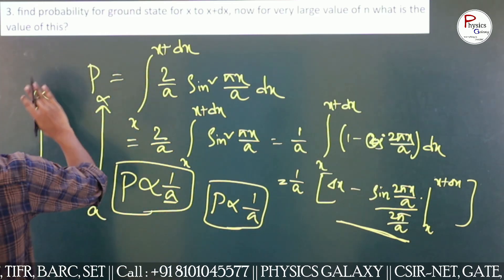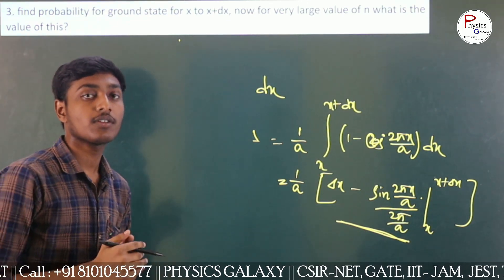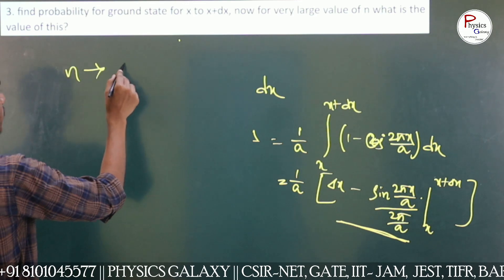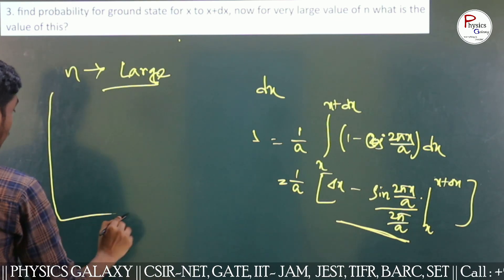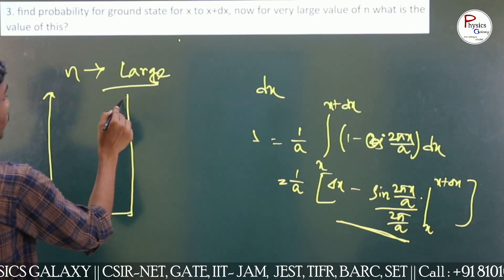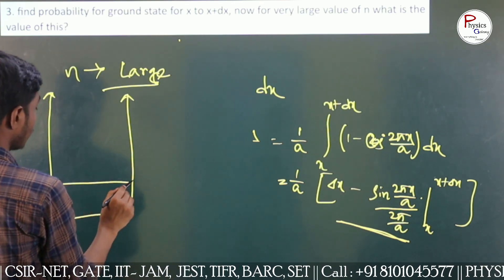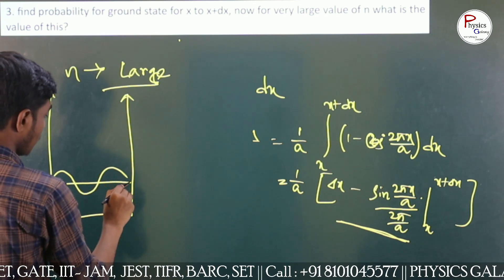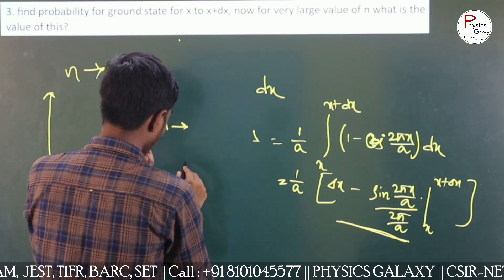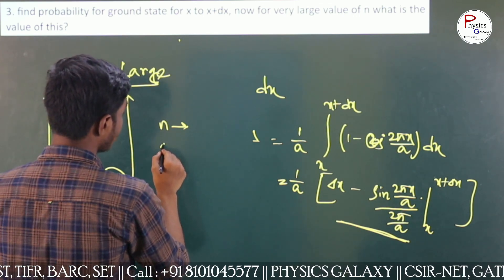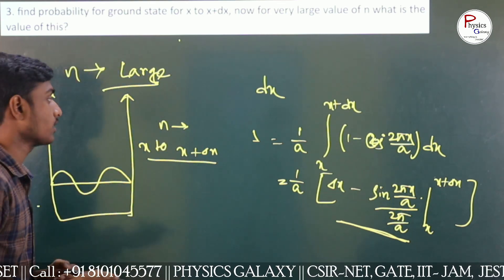Then they asked me: if we change the value of n such that n tends to large, what is the change in probability? As you know, from a 1D infinite potential box, if we increase the quantum number n, then the number of nodes and antinodes will also increase. So for n tending to large, the system goes to the classical state, and the probability at x to x plus delta x approaches a constant value.